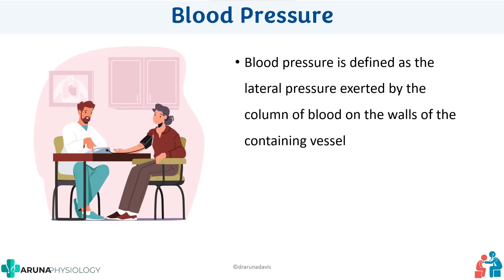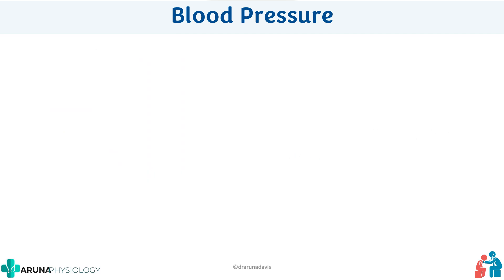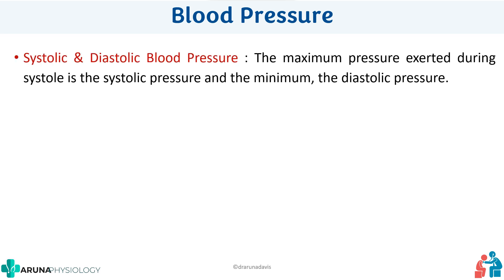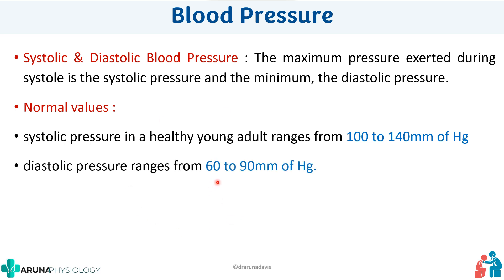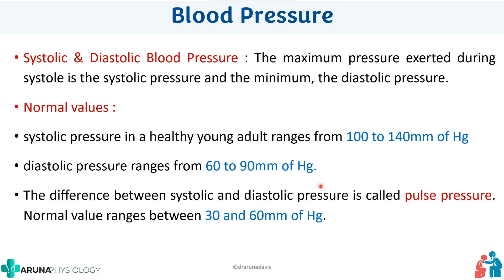Next, blood pressure. Blood pressure is defined as the lateral pressure exerted by a column of blood on the walls of the containing vessel. The maximum pressure exerted during systole is the systolic pressure, and the minimum is the diastolic. Normal systolic pressure in healthy young adults ranges from 100 to 140 mmHg, diastolic from 60 to 90 mmHg. The difference between systolic and diastolic is the pulse pressure, with a normal range of 30 to 60 mmHg.